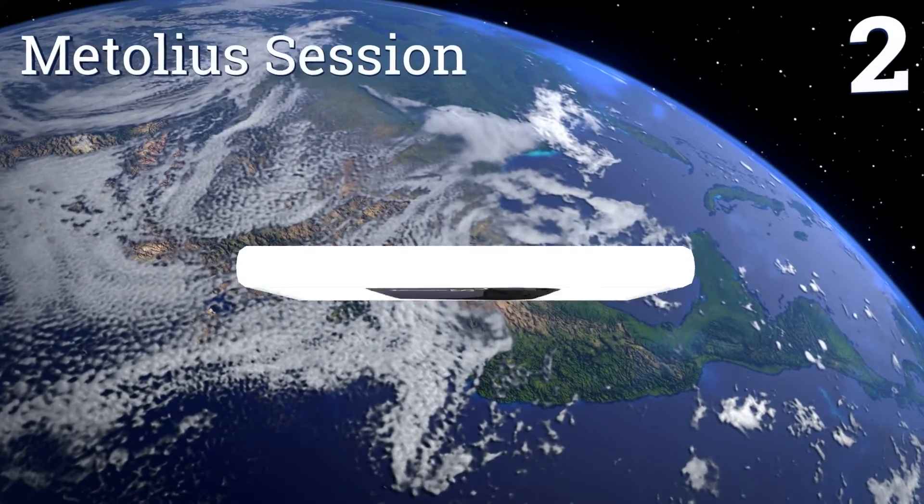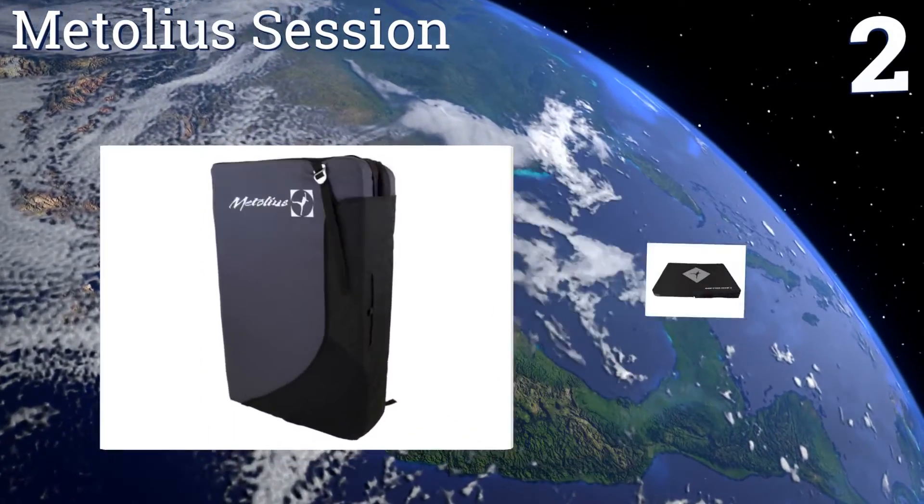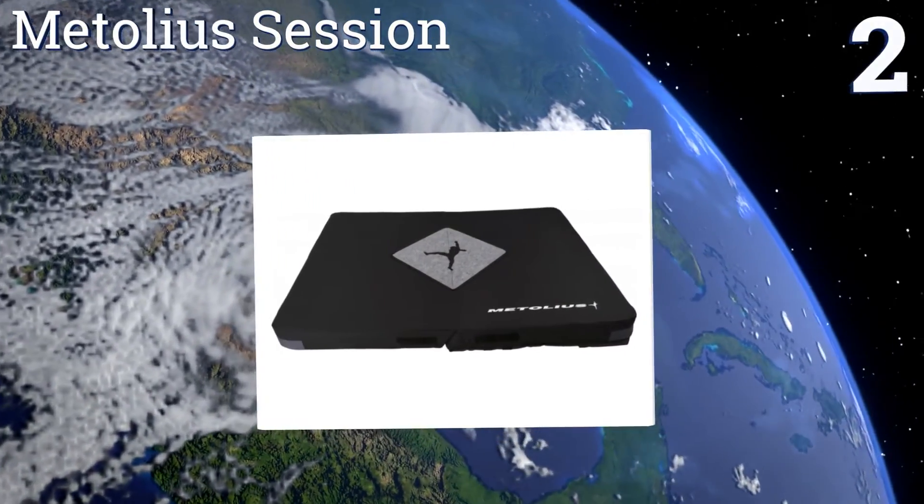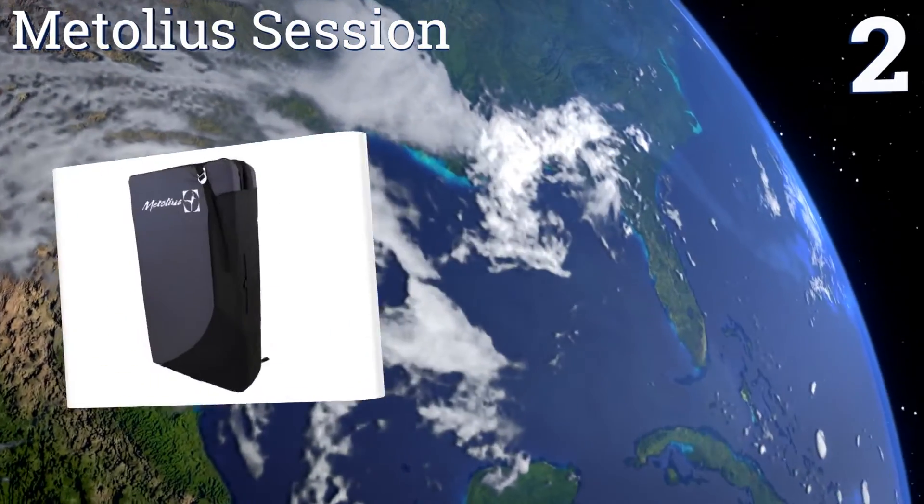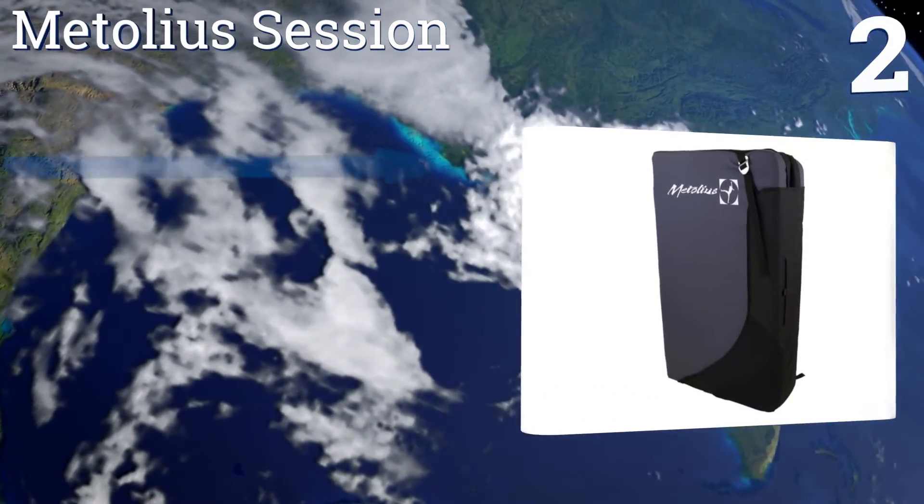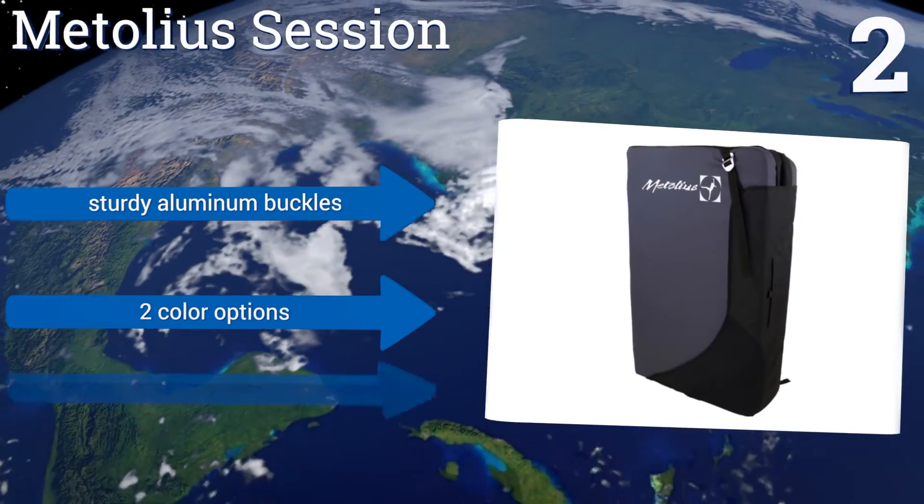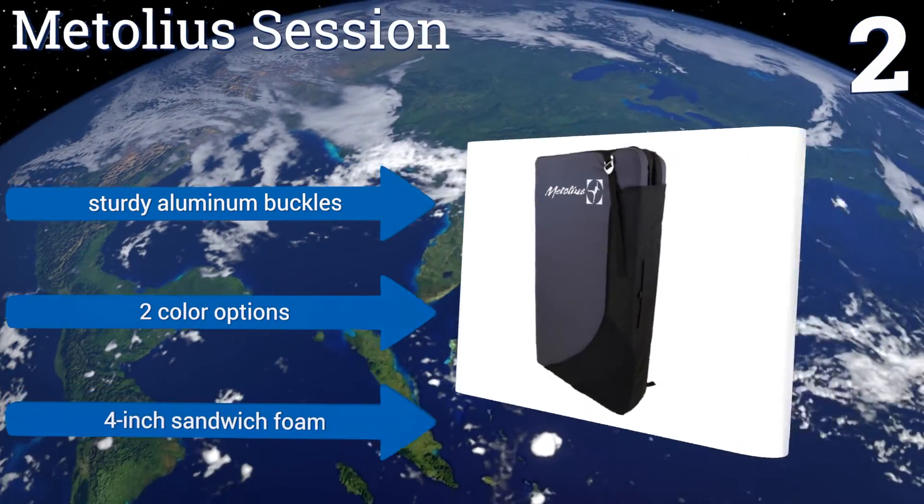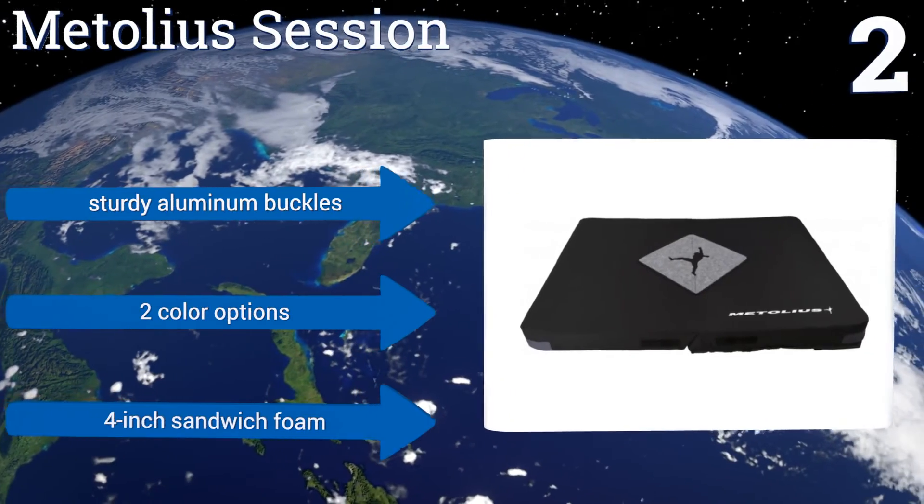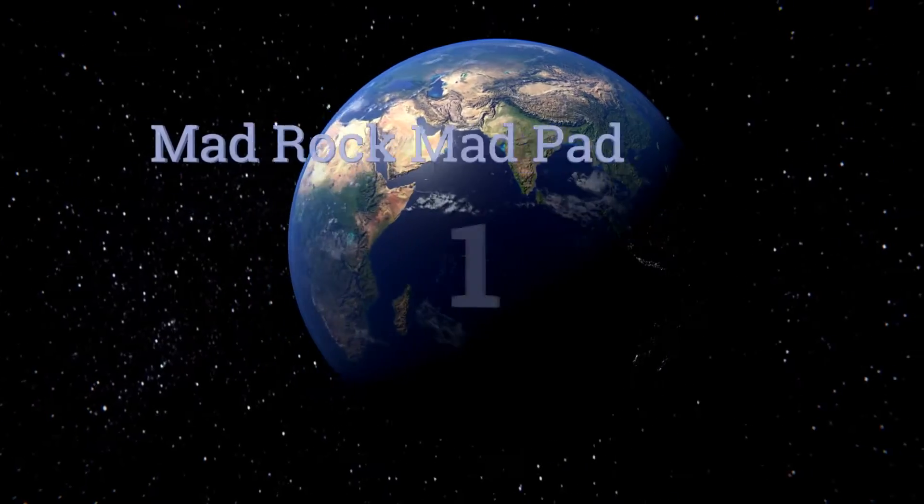At number two, a robust layer of outer fabrics help make the Metolius Session one of the more durable models available. Plus, it features an elastic cover that keeps any stored items from falling out while you're walking down the trail to your destination. It boasts sturdy aluminum buckles and four inch sandwich foam. It's available in two color options.